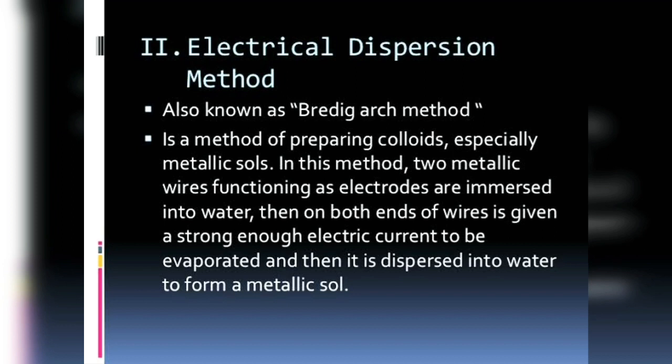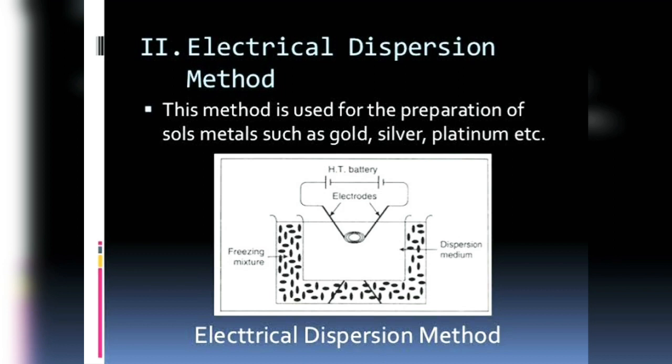The next method is the electrodispersion method. Here, colloidal solutions are prepared by means of electric current, which is why it is called the electro dispersion method, discovered by George Bredig in 1898. He discovered a brown colloidal solution of platinum by passing around 100 volts of current through a bigger-size platinum particle, breaking it down into a colloidal solution. This method is used for preparing colloidal solutions of copper, silver, gold, and platinum.